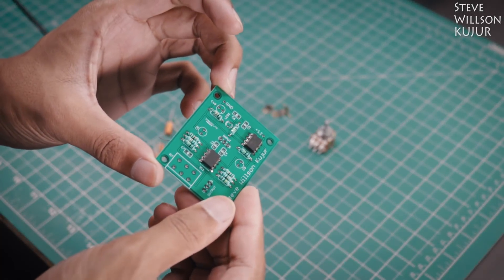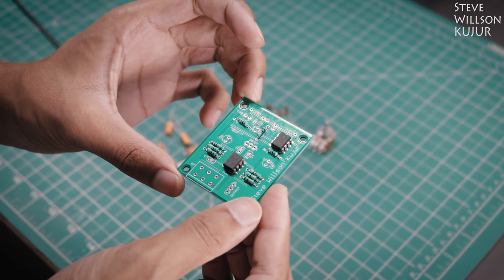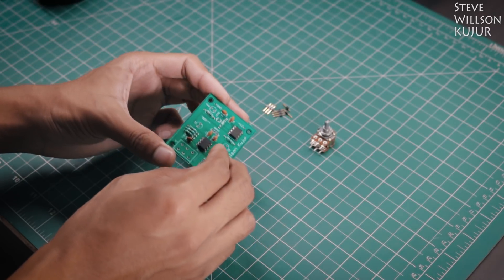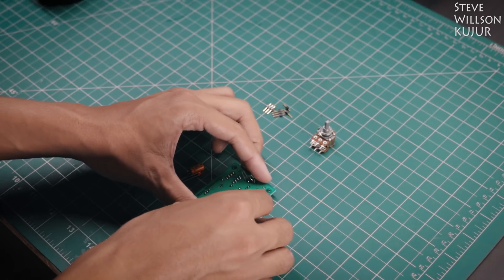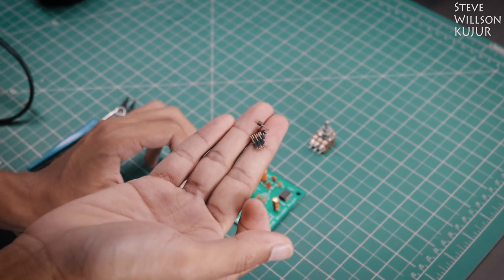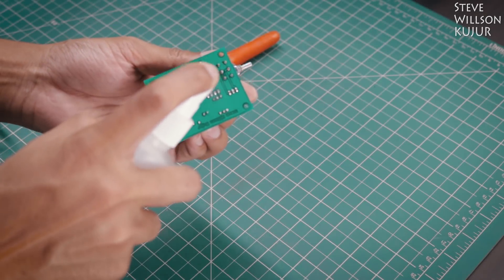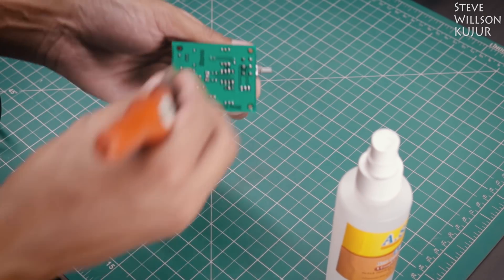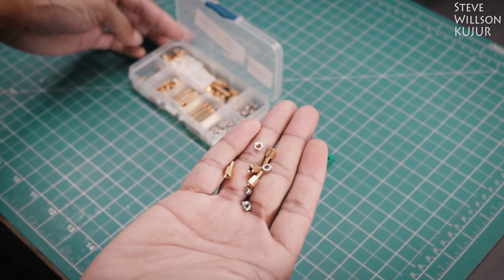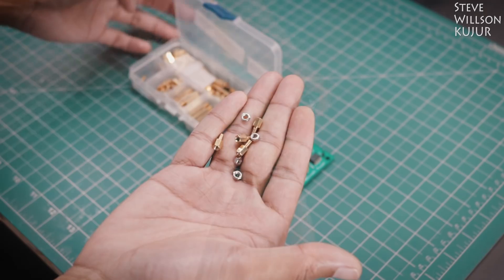First I soldered 2 ICs and all the resistors. And then I soldered all the capacitors, then the LED and all the male headers. And then I soldered the volume board. I used some acetone to clean the board, and then I used PCB standoffs to make it even look better.